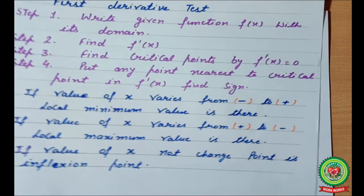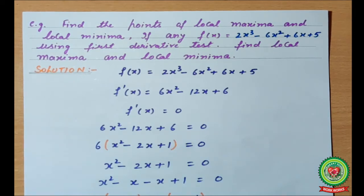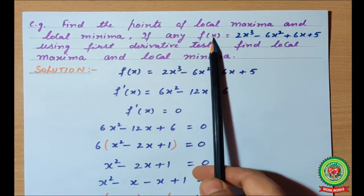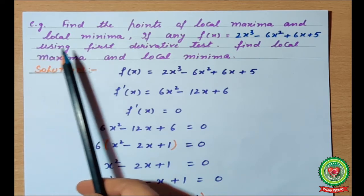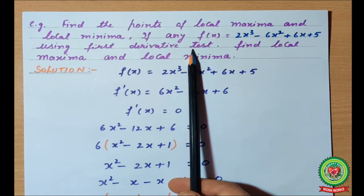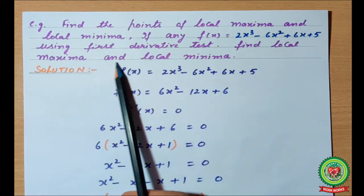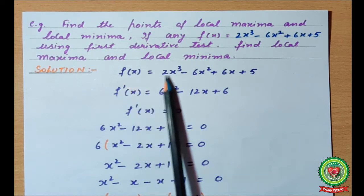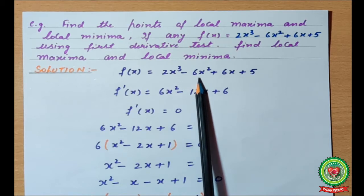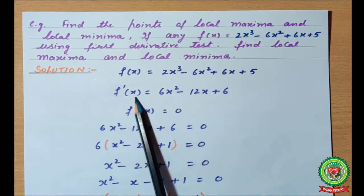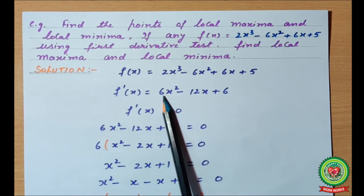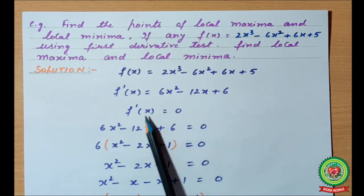Now let's take example 102 for more understanding. Find the points of local maxima and minima using the first derivative test, where f(x) = 2x³ - 6x² + 6x + 5. We will differentiate the value and represent it as f'(x). So f'(x) = 6x² - 12x + 6.